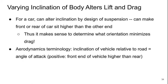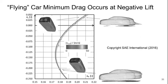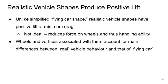For our basic form flying-car shape, the minimum drag tends to occur at a negative lift. We can see on this plot that at a lift coefficient of about negative 0.13, we get the minimum drag coefficient, while at zero lift the drag conditions are somewhat higher. However, realistic vehicle shapes with wheels added actually produce positive lift at the minimum drag condition. This is not ideal because it reduces the downforce on the wheels and reduces the handling capability of the car. The wheels and the vortices associated with them account for this main difference, which is one of the reasons why we sometimes need to put features on vehicles to add downforce, even though it comes at the expense of additional drag.